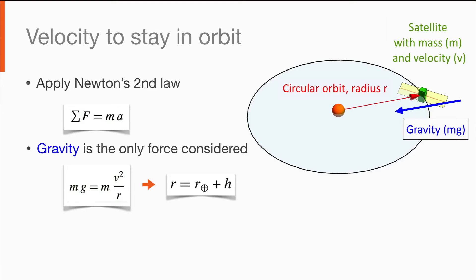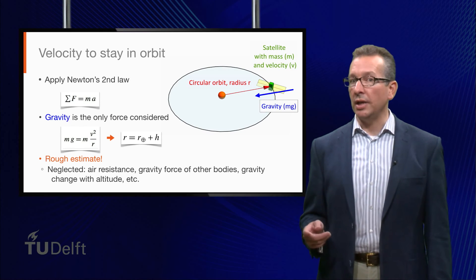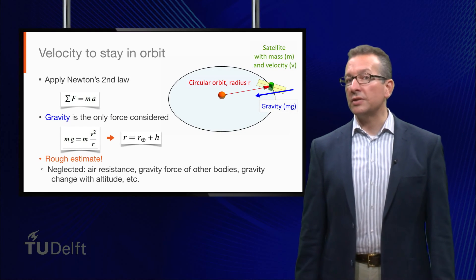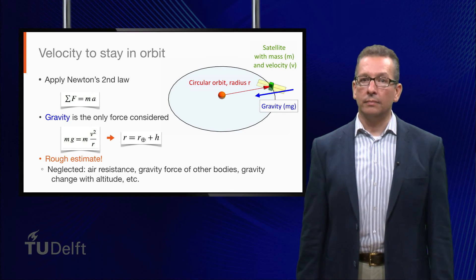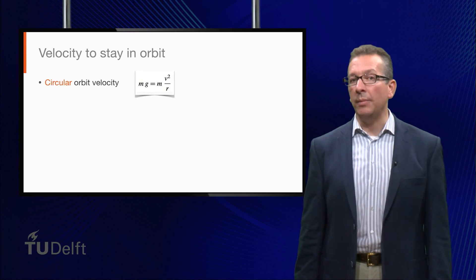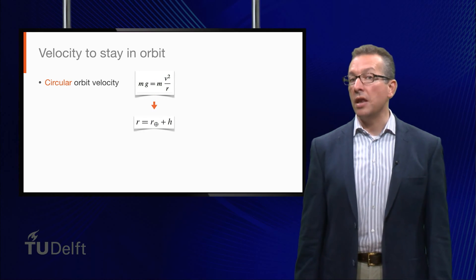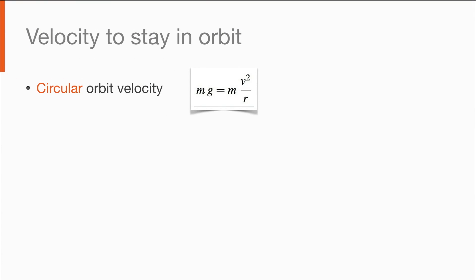Before we apply this equation, keep in mind that this is a very rough estimate again. We've neglected a host of other forces and effects, and we'll discuss how to deal with those later. Nevertheless, this will give us a decent first approximation of the velocity that we need. So the velocity for a circular orbit can be estimated by applying f is equal to ma. And we'll keep in mind that r is the length of the radius to the satellite, not the altitude. We divide both sides of the equation by the mass m and solve for v. Now we've got what we need to make a rough first approximation of the velocity required to maintain a circular orbit at a particular altitude.